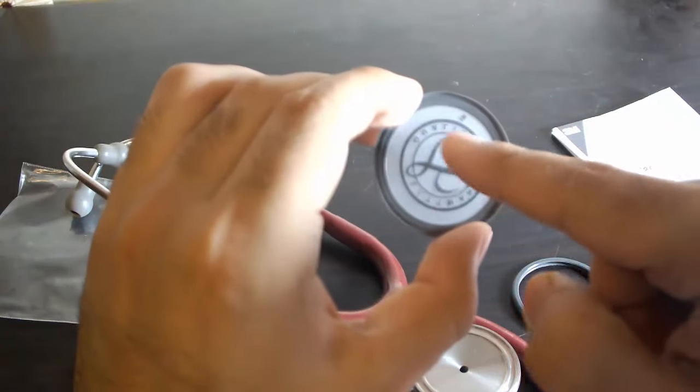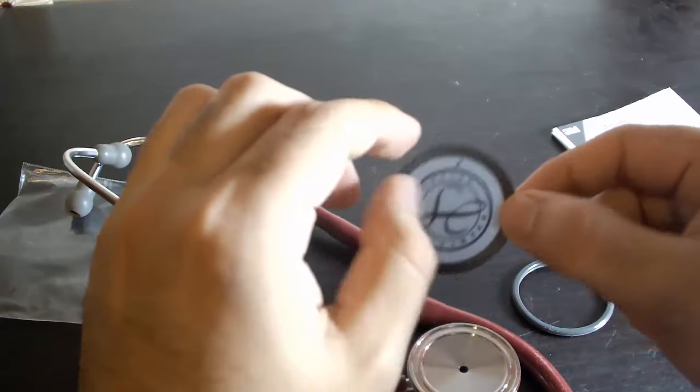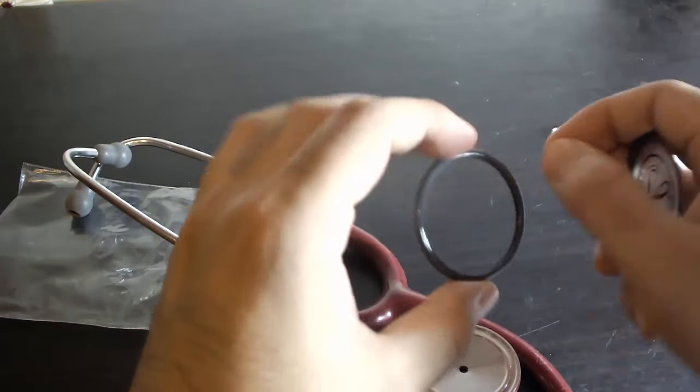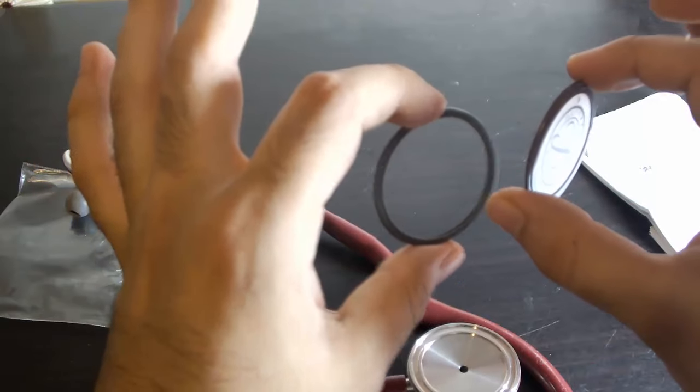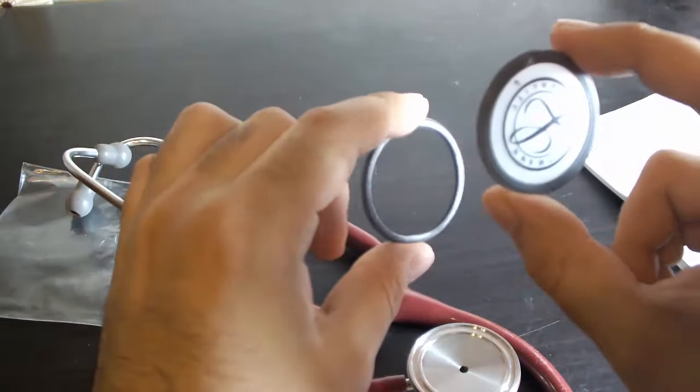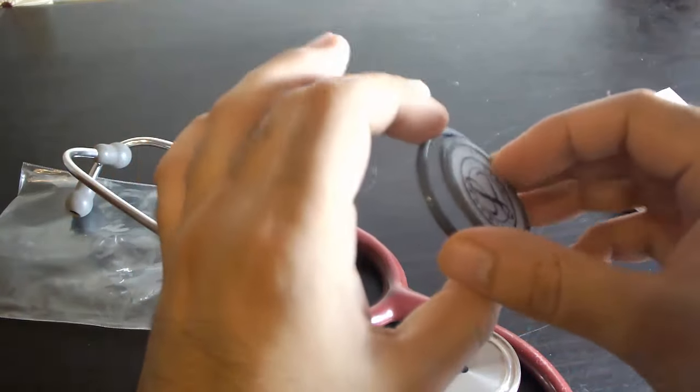Then, the right method to attach this diaphragm to the chest piece is: first, you take the diaphragm and fit it inside the rim. This is the first step you have to do.